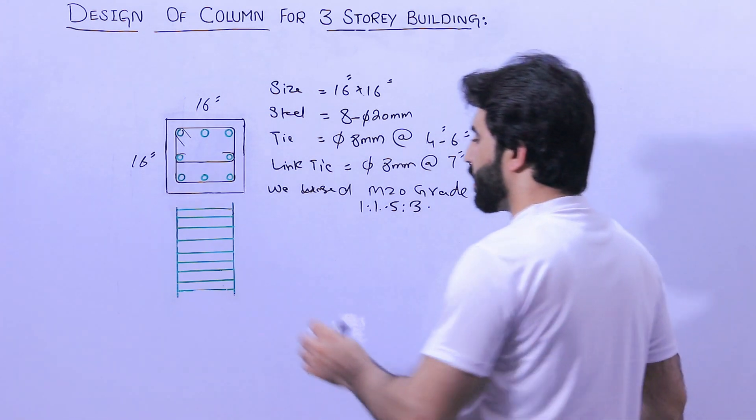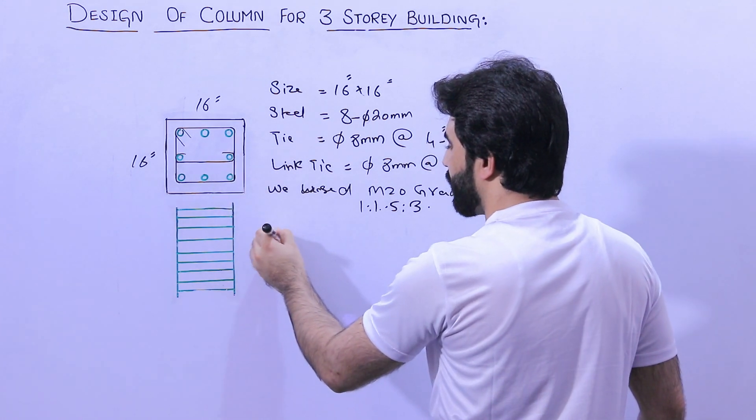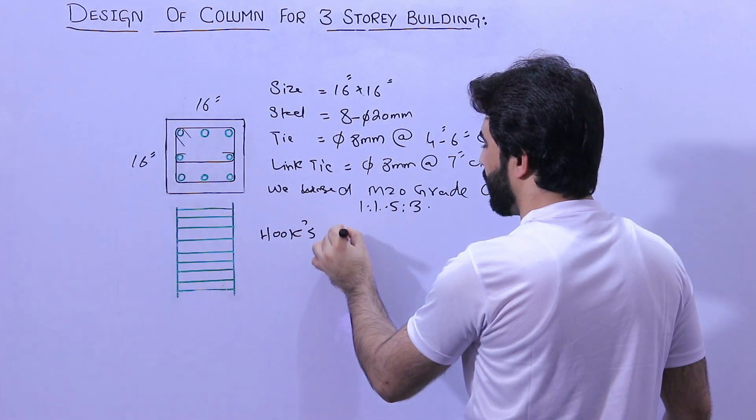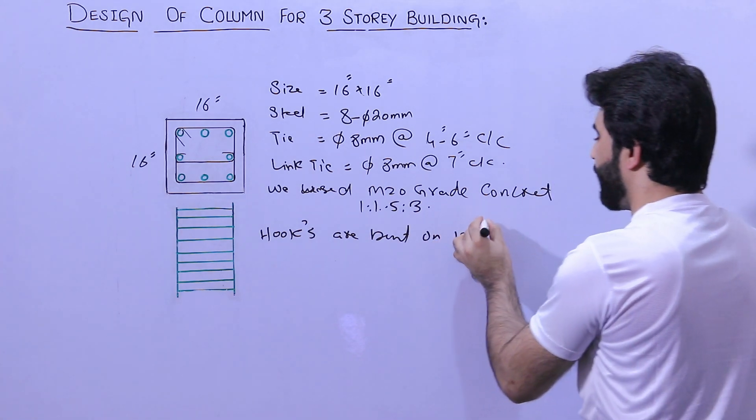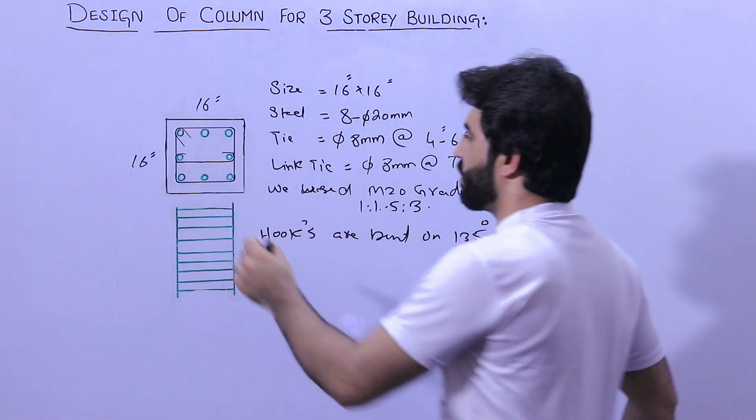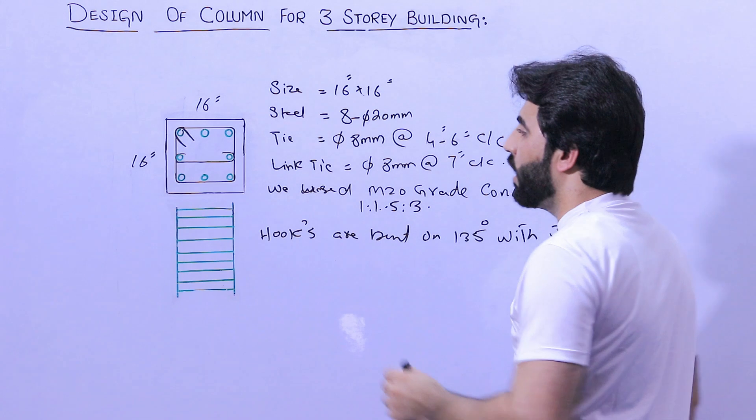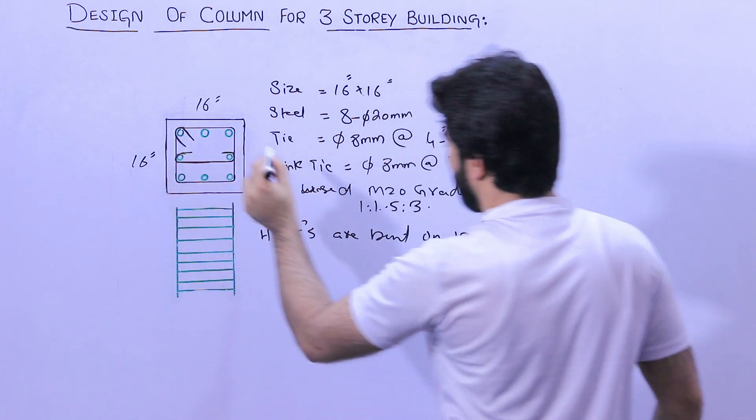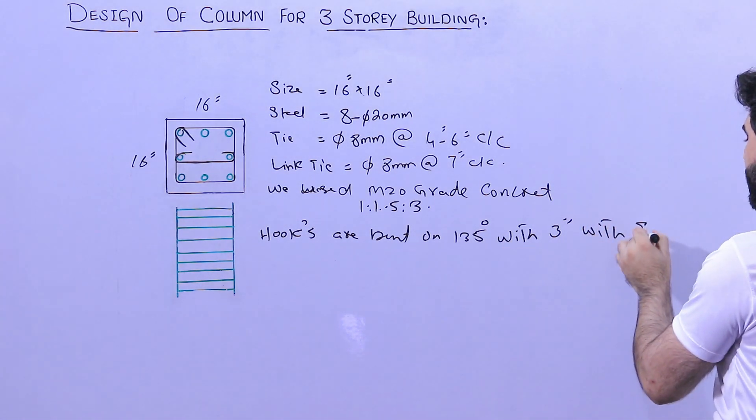Let me guide you for the hooks details. Hooks are bent on 135 degrees with 3 inches. You can see clearly, and this link is also 3 inches with tie link.